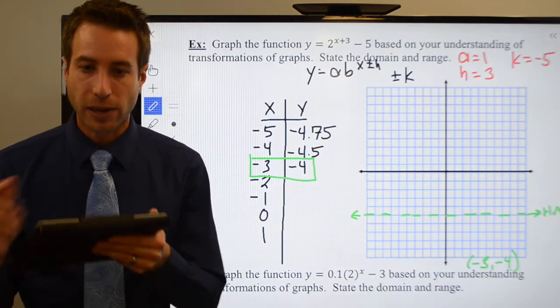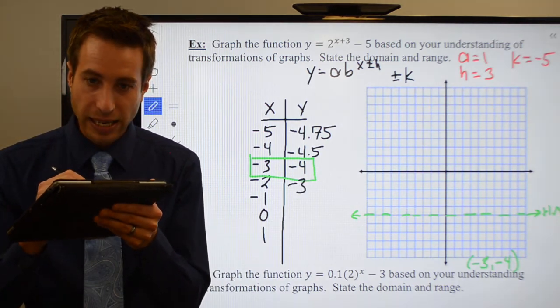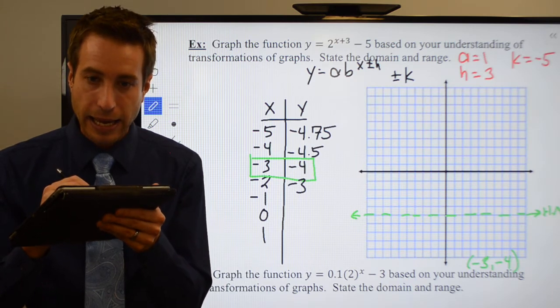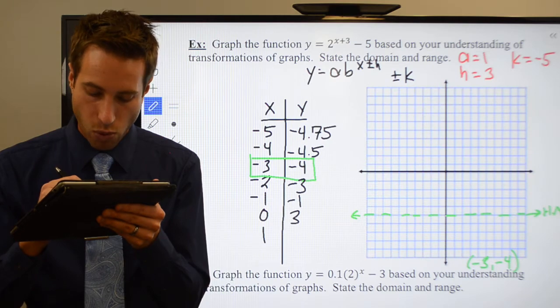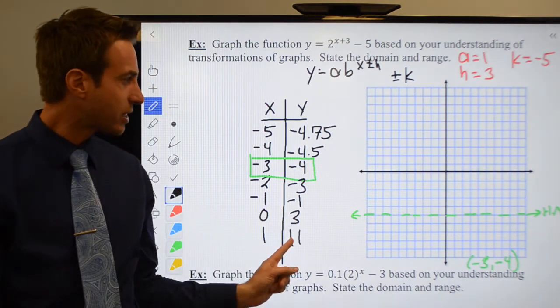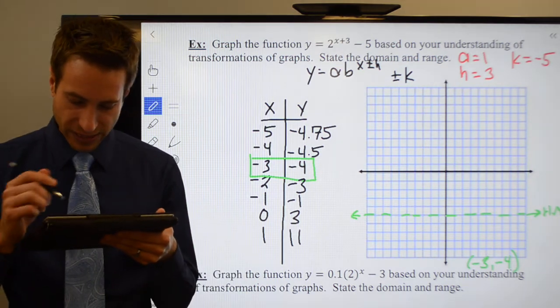Let's plug in a negative two. I wind up with a minus three. Plug in a negative one, I get a minus one. Zero gives three, and one gives eleven. That point's not really going to fit, but we might be able to fudge it a little bit. Let's go ahead and graph these guys and see what happens.